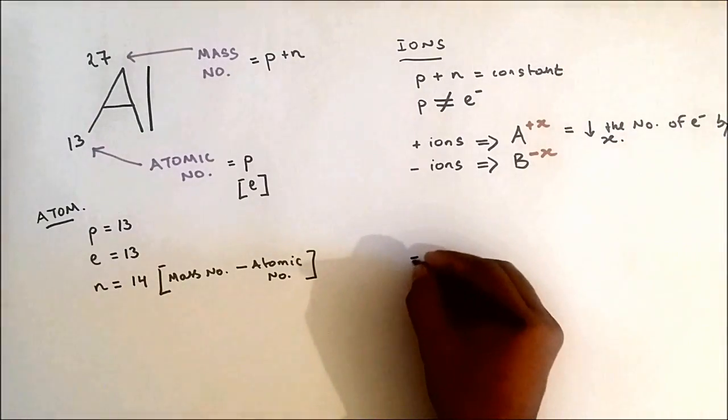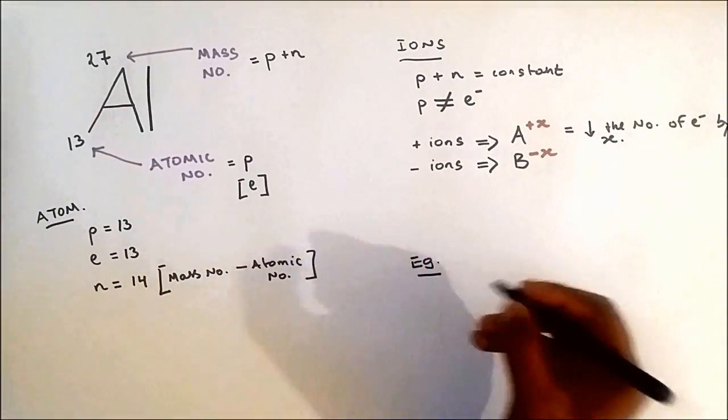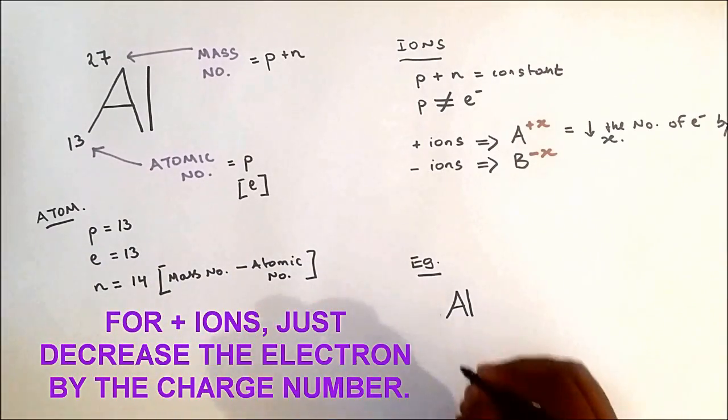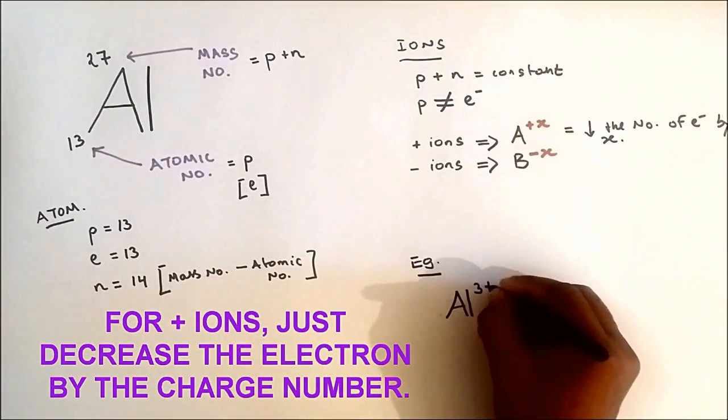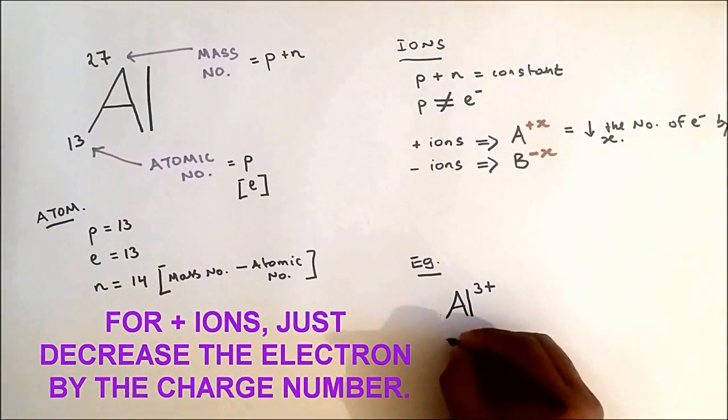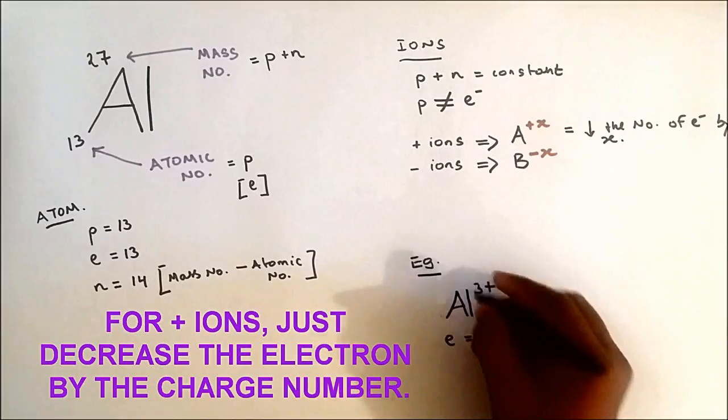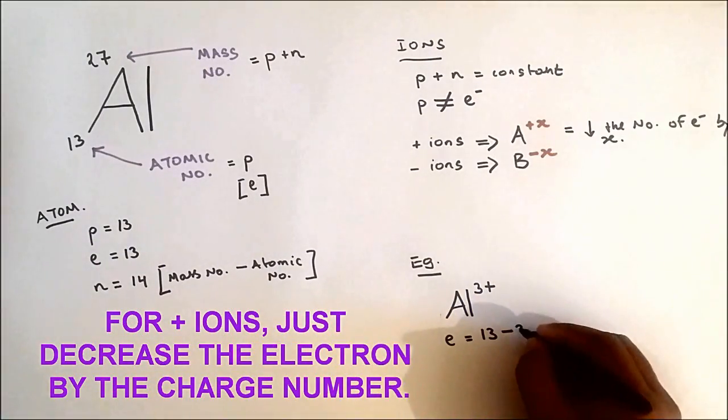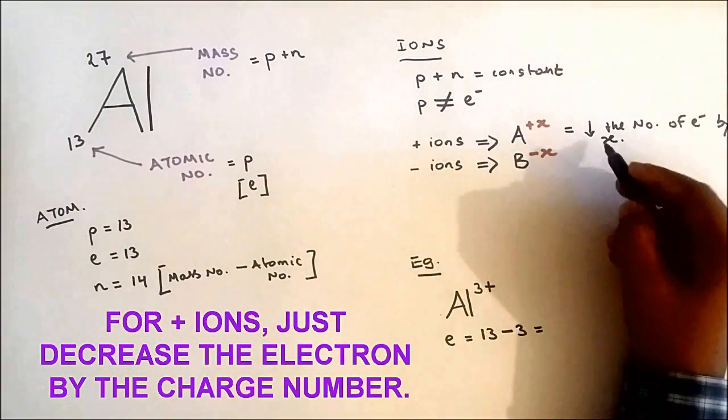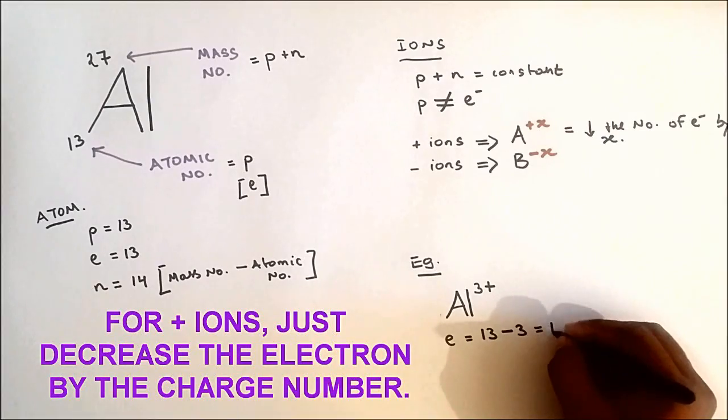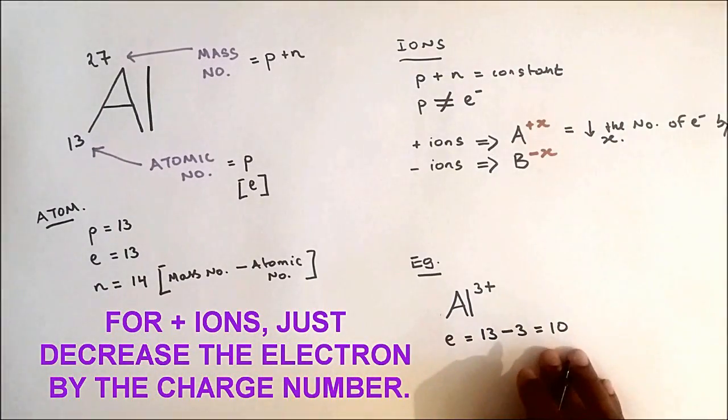So I'm going to show you an example over here. Positive ion: let's say we have aluminum 3+. We know that for the normal electron is 13, so in 3+ what do we do? It's 13 minus 3. And like I said over here, decrease the number of electrons by x, so it's giving us 10 electrons.